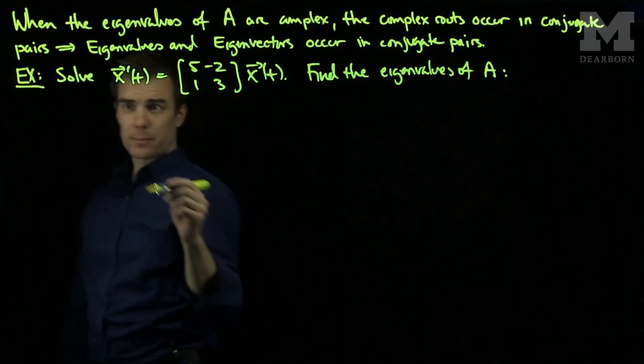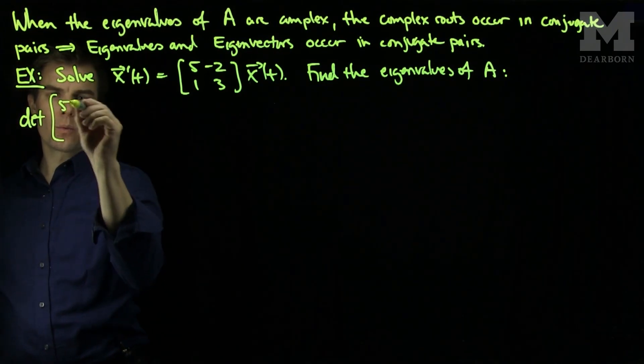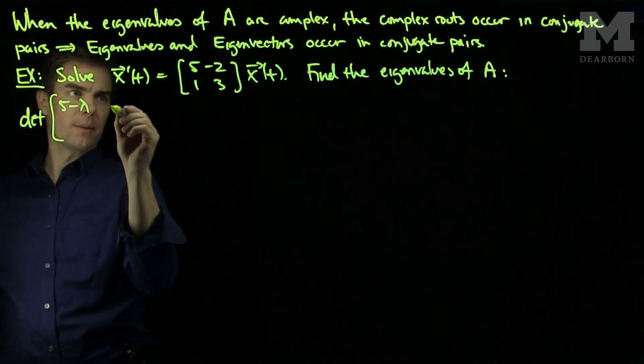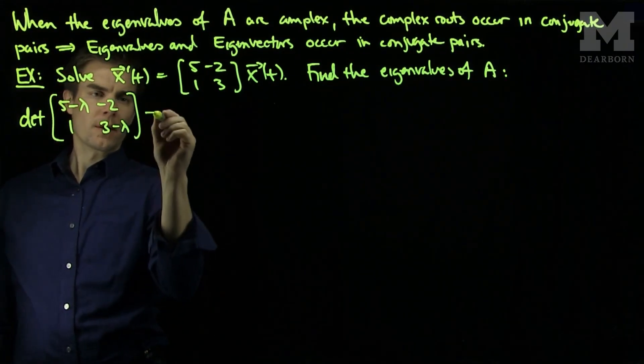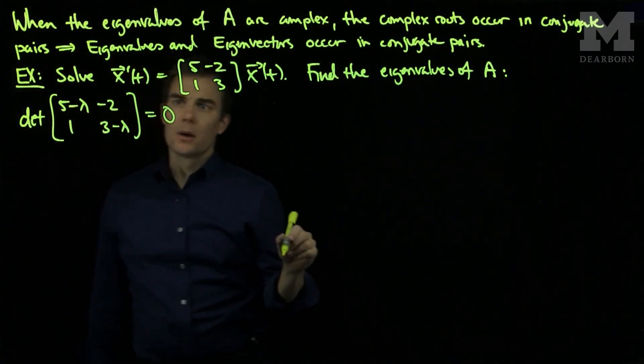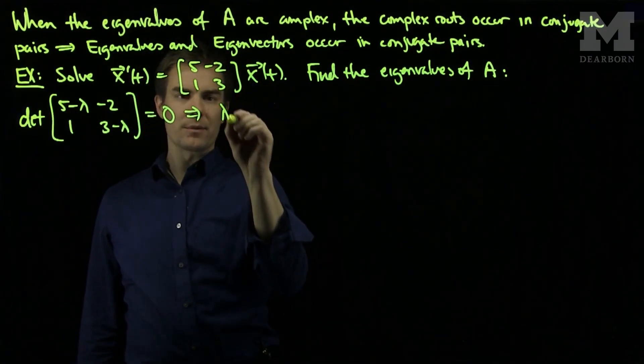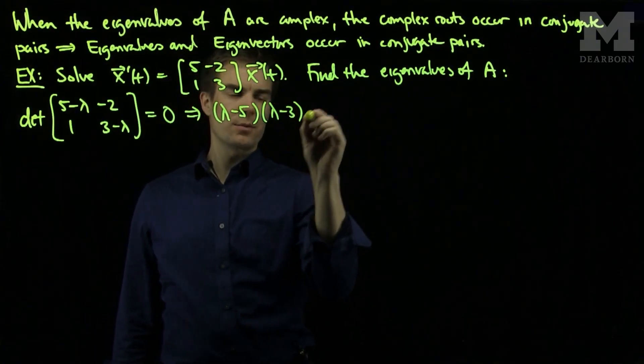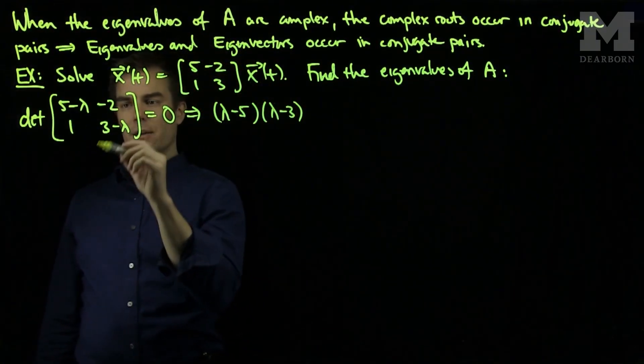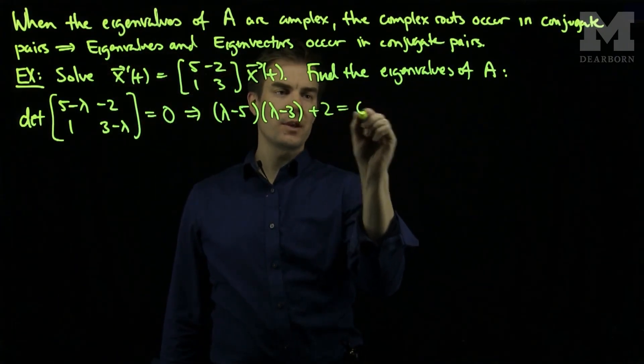We do this by computing the characteristic polynomial, the determinant of our matrix with lambda subtracted on the main diagonal, and we set this equal to 0. Computing this determinant, we have (λ-5)(λ-3) plus 2 equals 0.